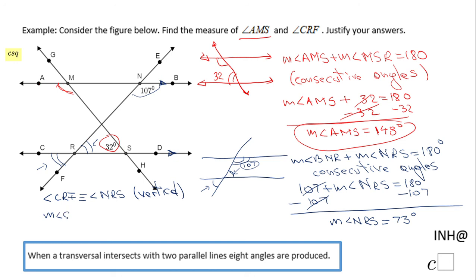So basically, the measure of angle CRF equals the measure of angle NRS, which brings me the answer for our problem. The measure of angle CRF will be nothing else than 73 degrees because they are congruent.